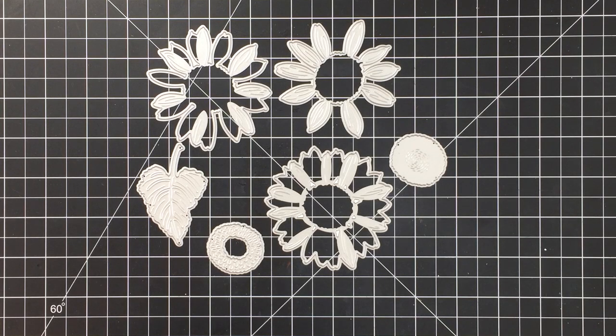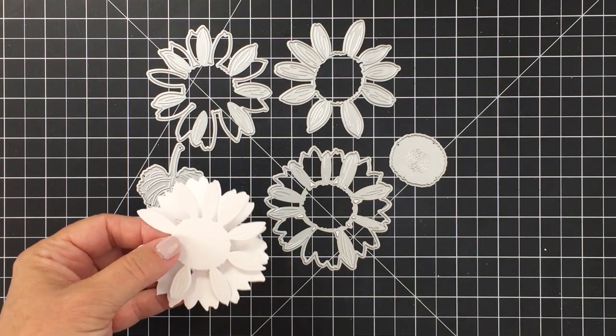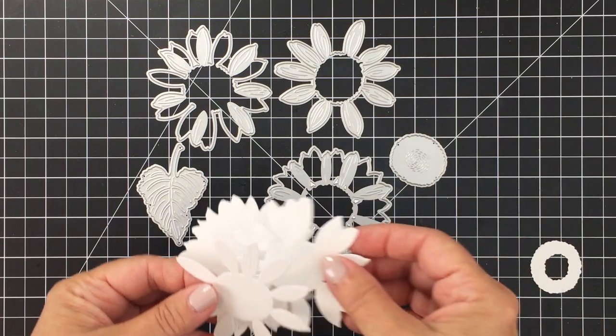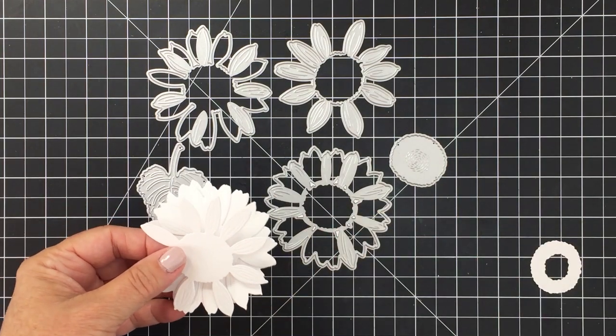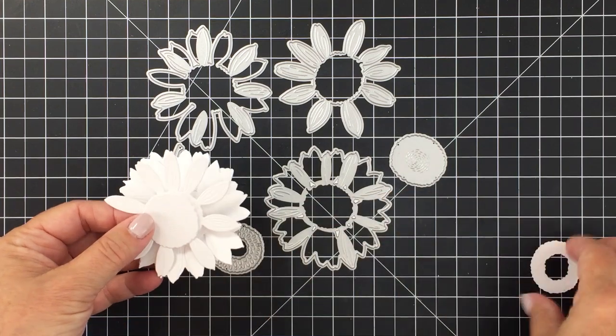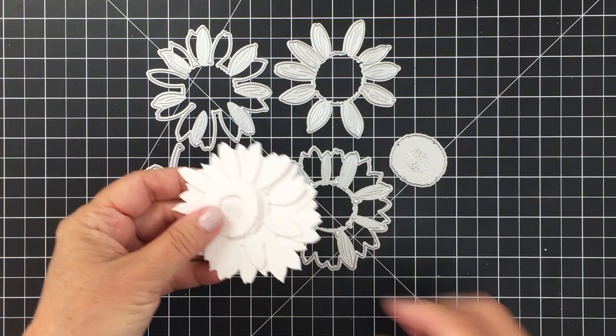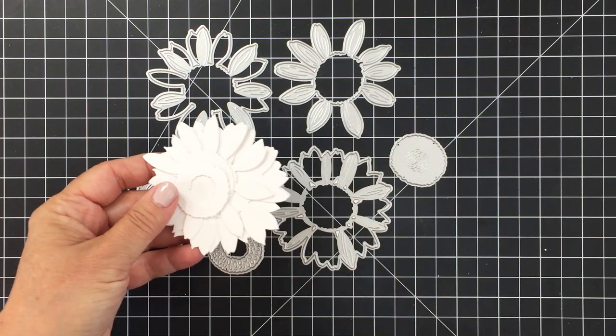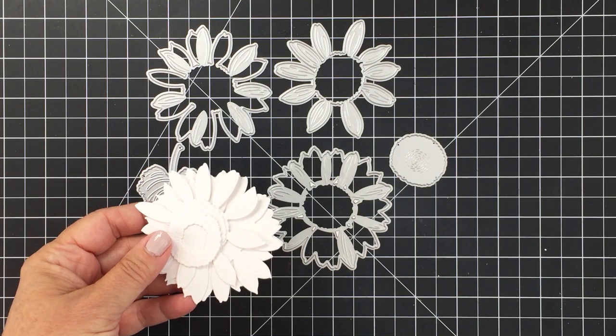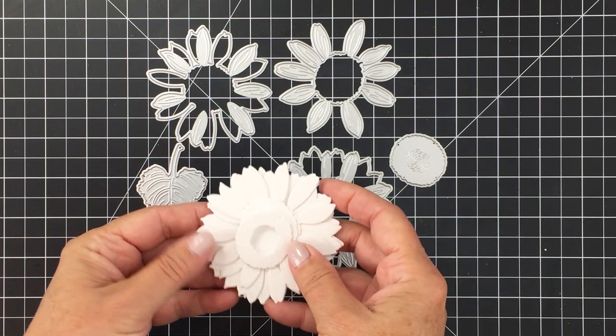I'm starting off here by showing you the Lovely Layers Sunflower die set. It is so much fun. I love it and this will give you these beautiful cuts here to create the most lovely layered sunflower. It is really gorgeous and I'm just showing you here all of the little cuts on some white cardstock.